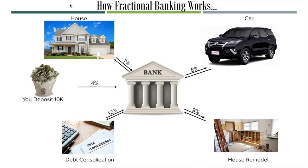Let's see how much more the bank made than you did. For the mortgage, they charge seven percent and pay you four — a spread of three percent. For the car, they charge eight percent and pay you four — a spread of four percent. For the house remodel, nine percent minus four is five percent. For debt consolidation, twelve percent minus four is eight percent. That totals a twenty percent spread — the bank made twenty percent and paid you only four percent.